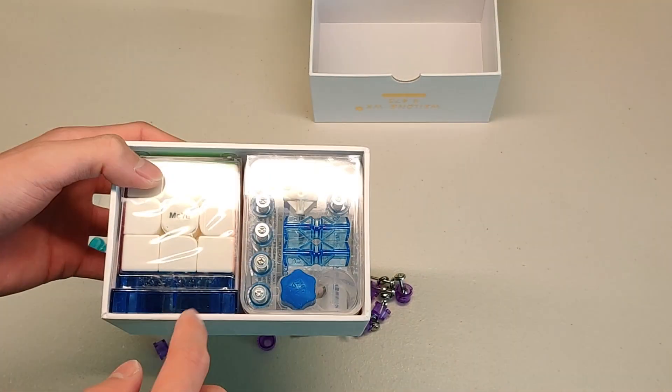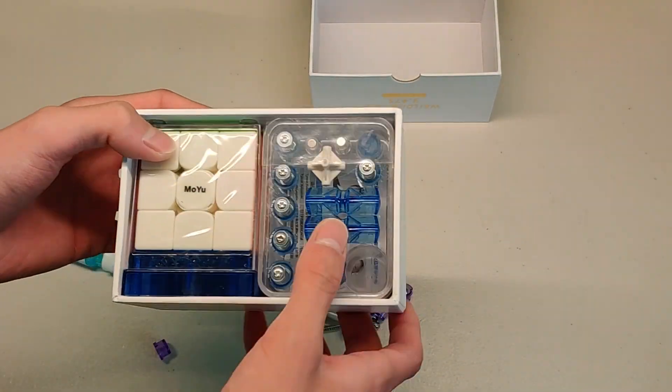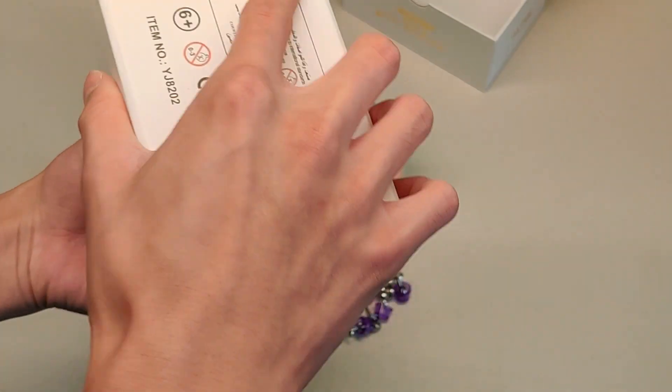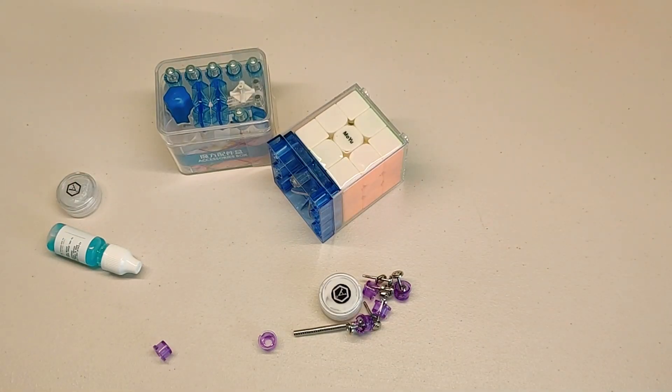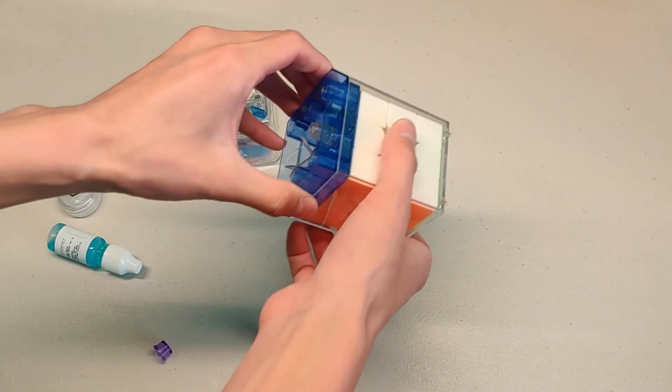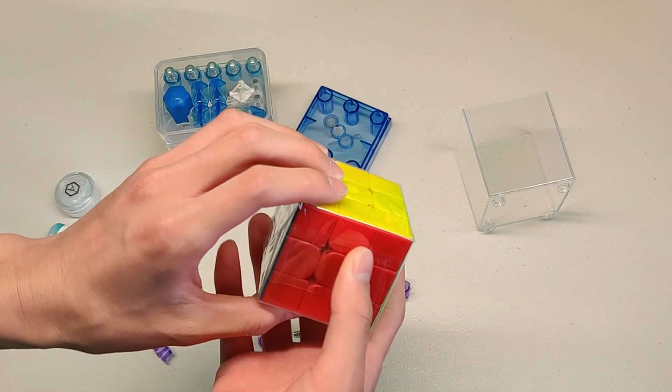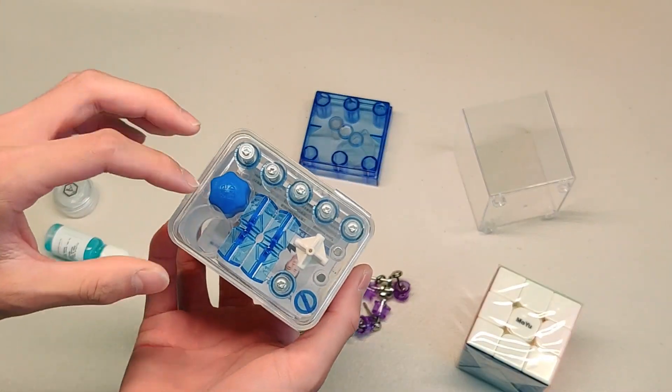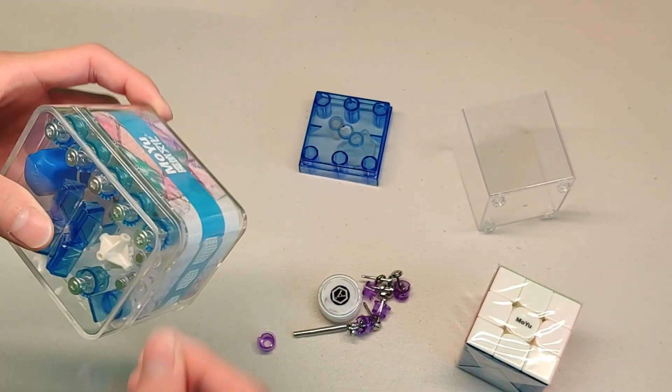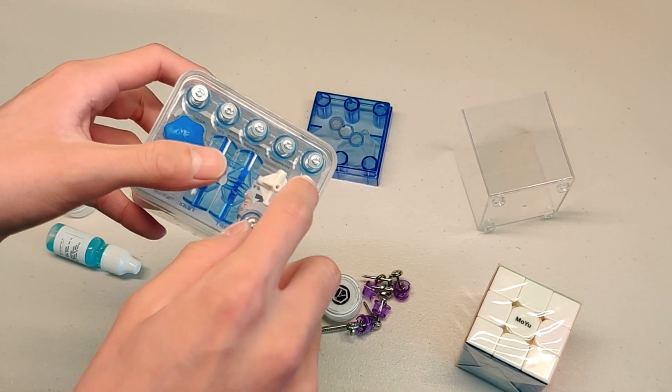So we have here the cube, English Moyu logo as I said. Let's just get everything out of here. Let's just take the cube out first. Then in here, there's something I need to get, and that's these extra magnets here.